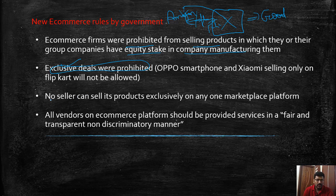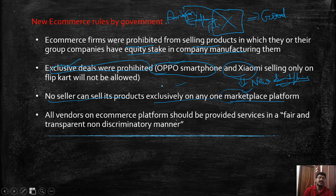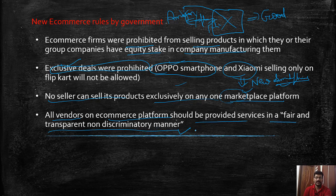Exclusive deals are also prohibited. No seller can sell its products exclusively on any single marketplace platform. Previously, brands like Xiaomi or OnePlus would do flash sales exclusively on one platform — under the new rules this is not permitted. Additionally, all vendors on an e-commerce platform must be provided services in a fair, transparent, and non-discriminatory manner, addressing the discriminatory practices followed by companies like Amazon and Flipkart.